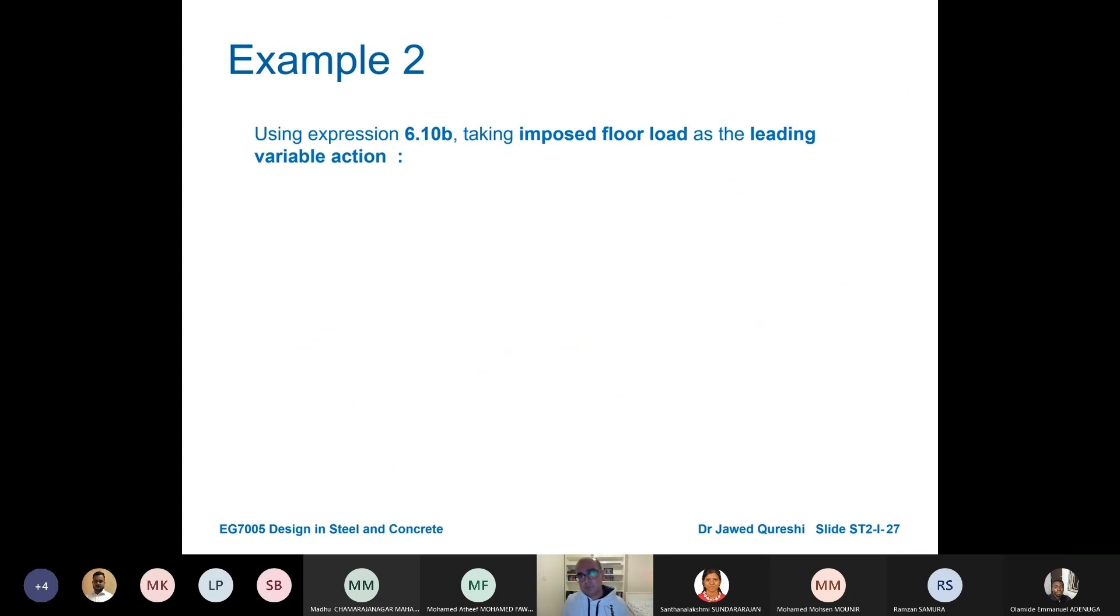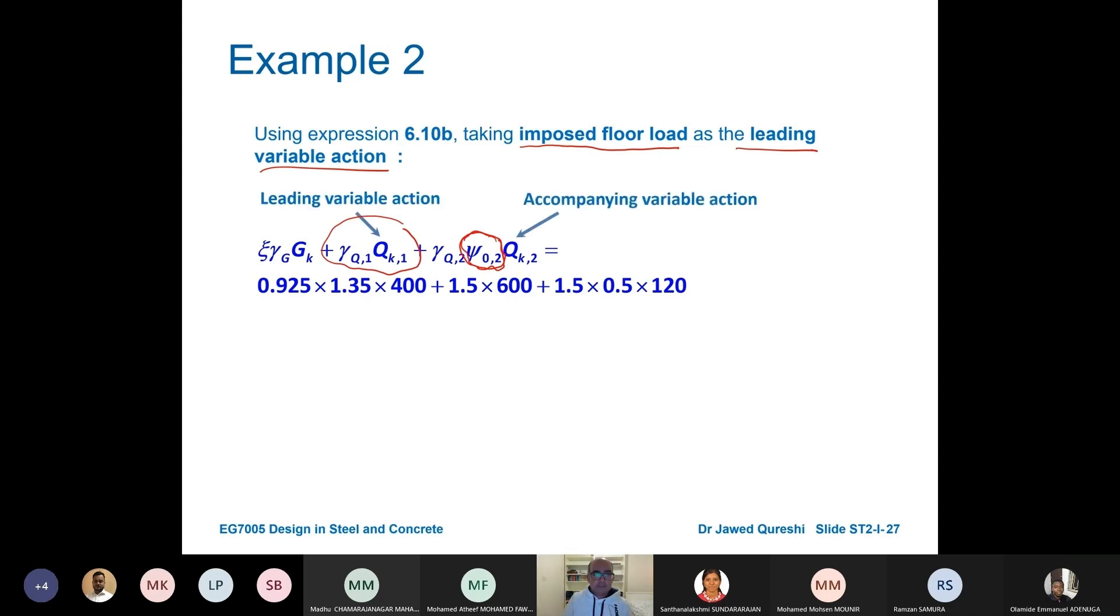So the diagram that I come up is this one using equation 6.10a. Now using 6.10b there is one important difference from 6.10a. 6.10a has got this psi factor only in the second term. Now it depends which one we are taking as leading variable. Here we are taking imposed floor load as leading variable action, it means that it appears first and wind appears second. Now here you can see that psi factor is only multiplied with the second one. So this will affect the results. First one is leading variable, second one is accompanying variable.